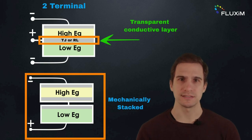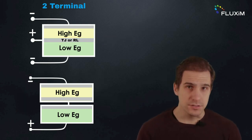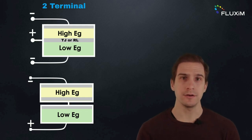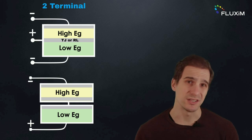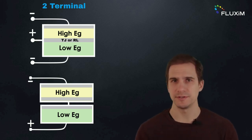Also known as tunnel junction or recombination layer, which is essential to form an ohmic contact between the subcells. This configuration requires less wiring and is simpler to install, but the fabrication process is challenging since the top cell must be deposited without damaging the bottom cell.